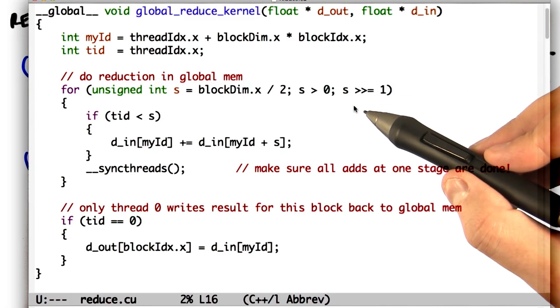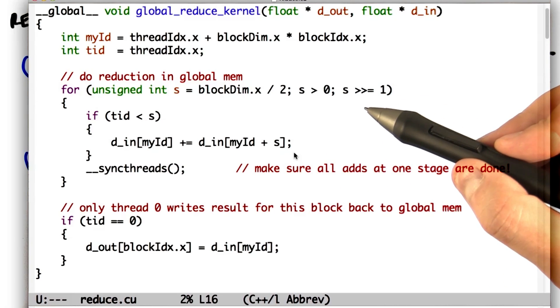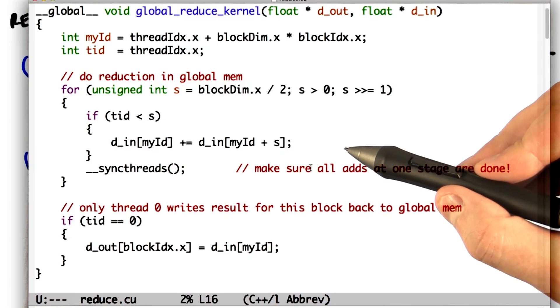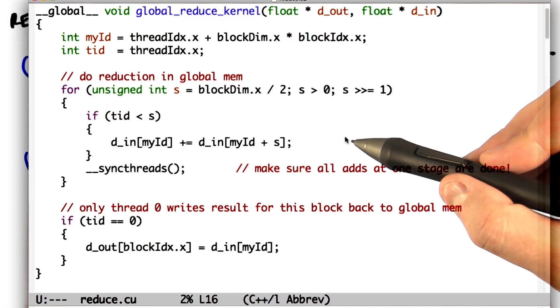Each block is going to be responsible for a 1,024 element chunk of floats. We're going to run this loop within the kernel. On each iteration of this loop, we'll divide the active region in half.